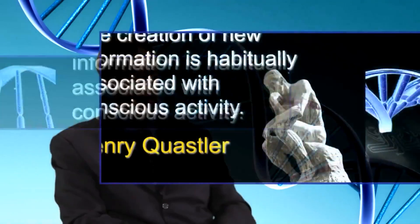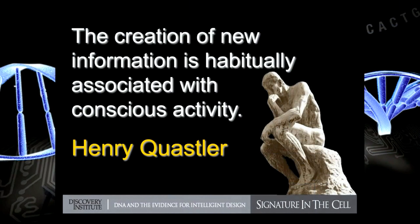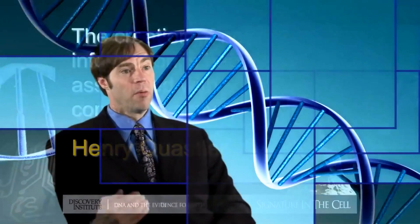DNA encodes the proteins that do all the important jobs in the cell. So where did that information come from? Since the 1950s, origin of life biologists have realized the central thing they have to explain is the origin of information. Model after model has stumbled, or even come to a grinding halt, has failed to explain precisely that feature of life.